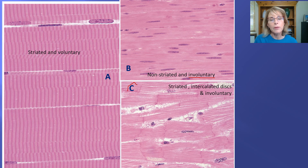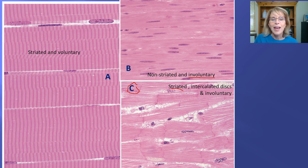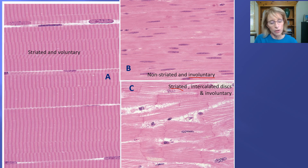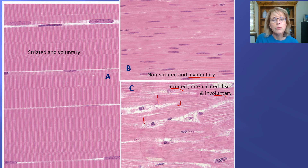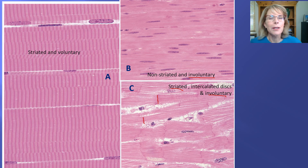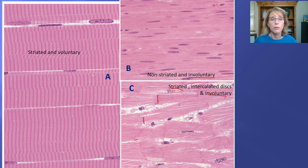Cardiac muscle is striated — if you zoom in you can see stripes there — but cardiac muscle is also involuntary. You cannot make your heart beat to whatever tempo you want. And remember that cardiac muscle has structures called intercalated discs. These intercalated discs are really important to the way cardiac muscle does its job, and we'll be talking about them a lot when we get to the cardiovascular system. In the meantime, let's talk about these three different types of muscle tissue.